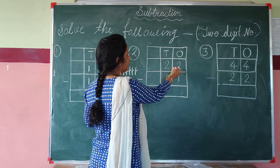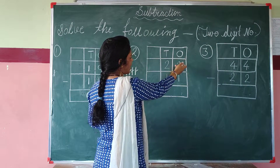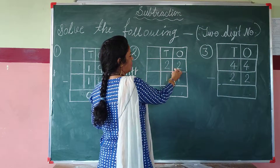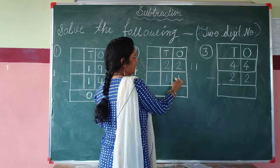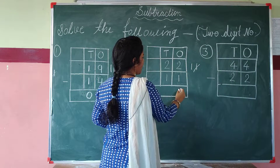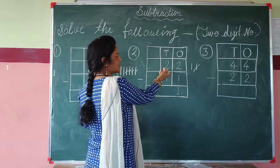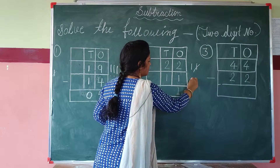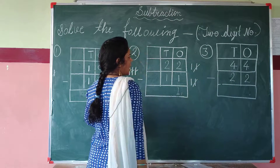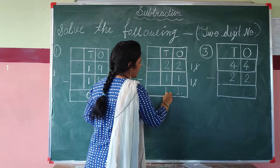Now we solve the next question. Look here. This is number 2. We solve from the 1's place — the right side. We draw 2 lines: 1, 2. We cut 1 line. How many lines are there? 1. We write 1 at the 1's place. This is number 2 at the 10's place. We draw 2 lines: 1, 2. We cut 1 line. How many lines are there? 1. We write 1 at the 10's place.